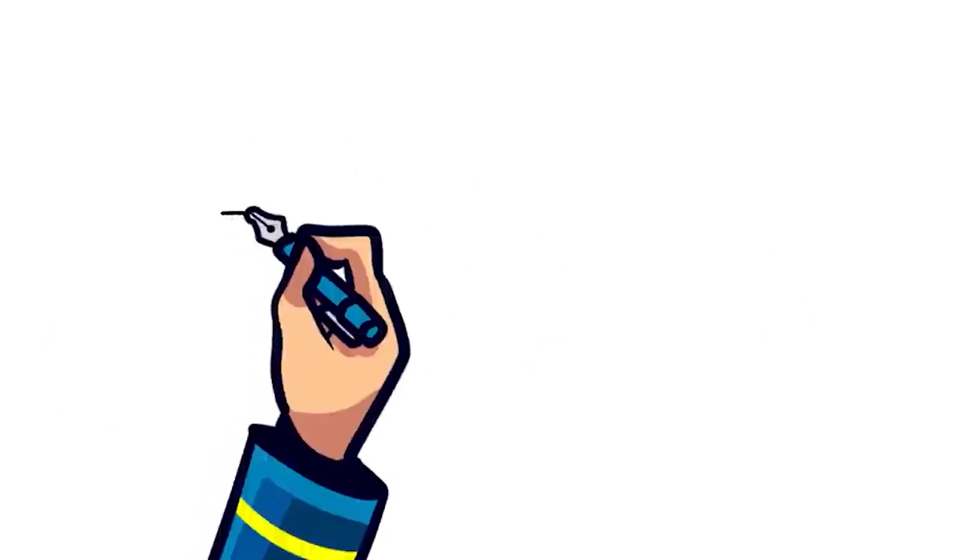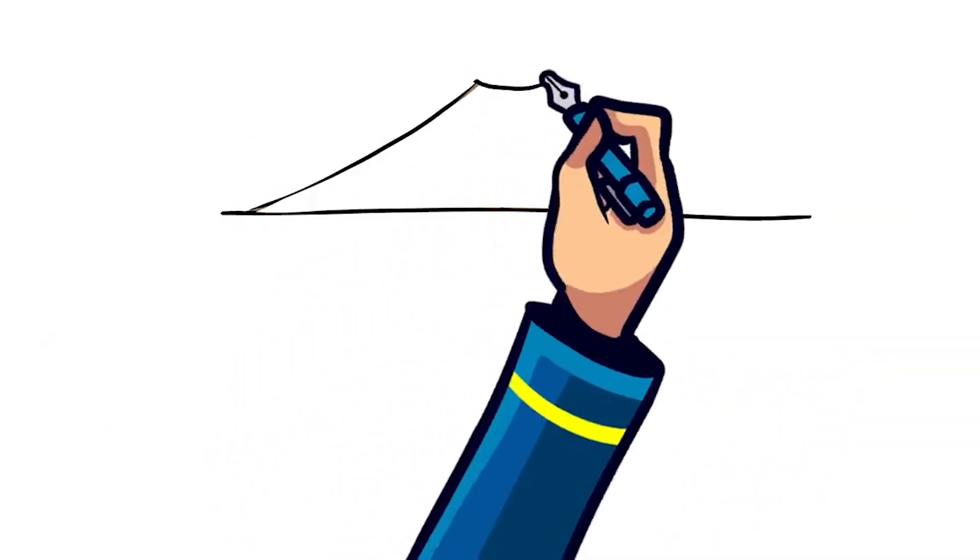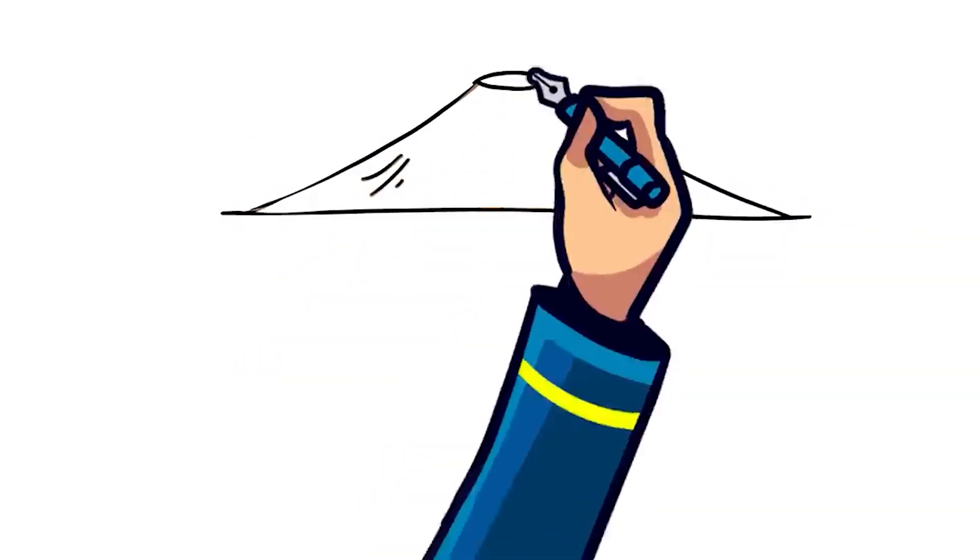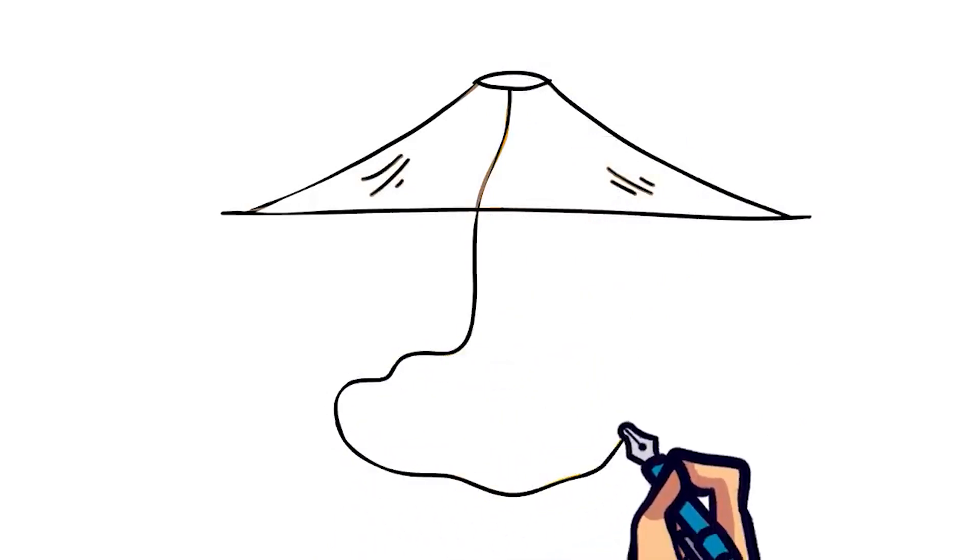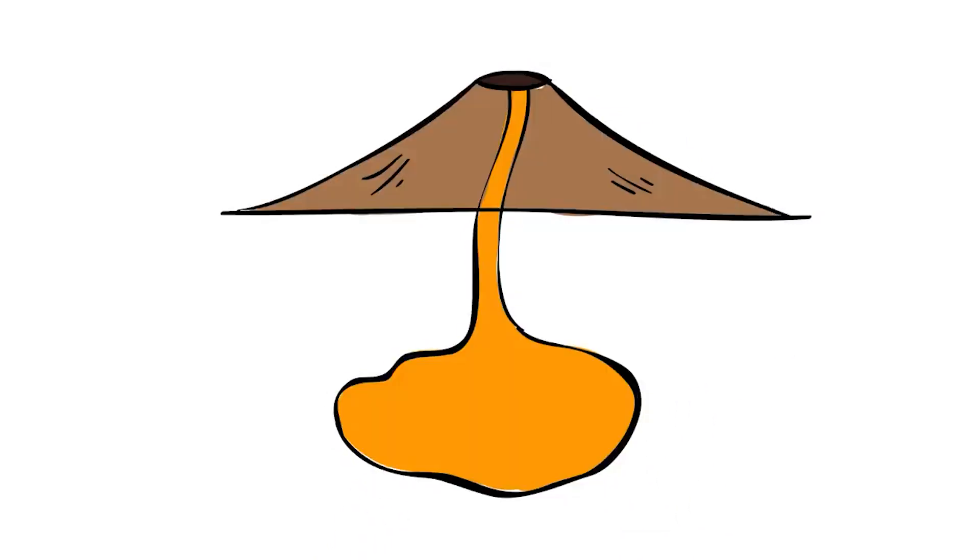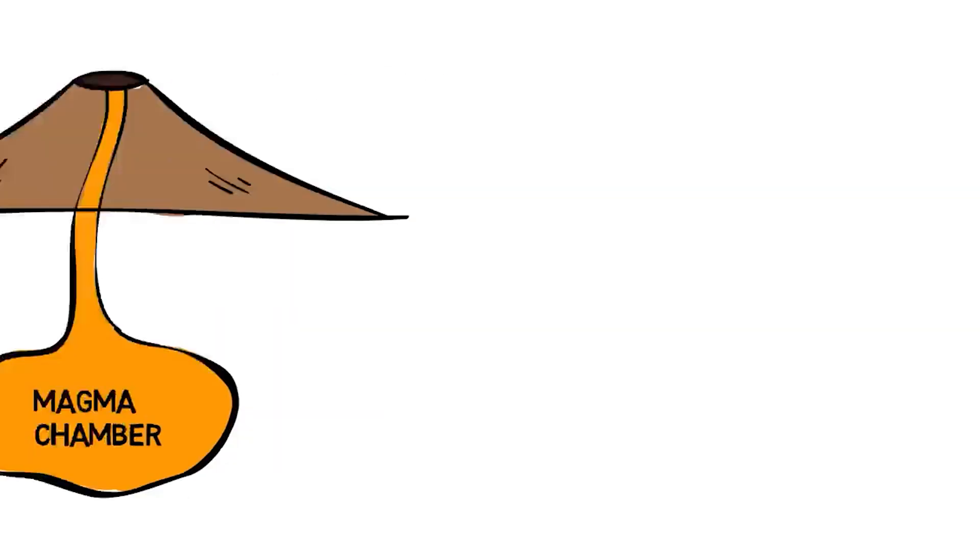Magma has less density than the rock surrounding it, and materials with less density will usually float or rise above higher-density items. The magma will try to float to the top and seek out cracks and other spaces to go into, which can form magma chambers.